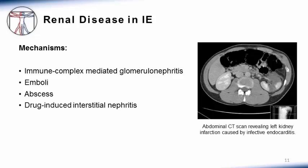Pictured here is imaging of the brain that demonstrates a ring-enhancing lesion due to an abscess resulting from an infected embolus in infective endocarditis. Renal disease occurs through one of three mechanisms: immune complex mediated glomerulonephritis, septic emboli to the kidney causing abscess, and finally drug-induced interstitial nephritis, which can be caused by the antibiotics used to treat infective endocarditis, in particular beta-lactams. Pictured here is an abdominal CT scan showing left kidney infarction caused by infective endocarditis.